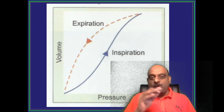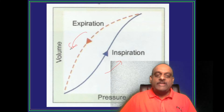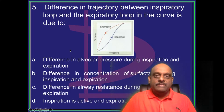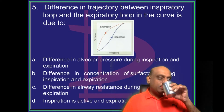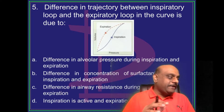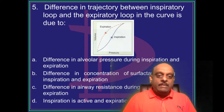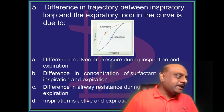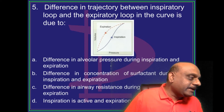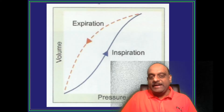This is the typical volume-pressure curve. Why is there a difference in the trajectory between the inspiratory and expiratory loop? Ahemed says it is the difference in surfactant, and Sharmistha Singh and Sugan Sunandini are also saying it is the difference in surfactant — absolutely right.